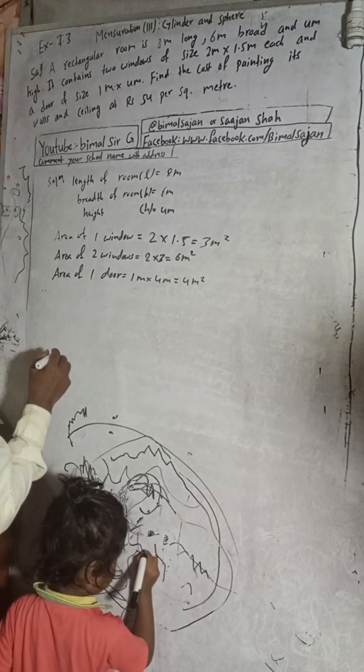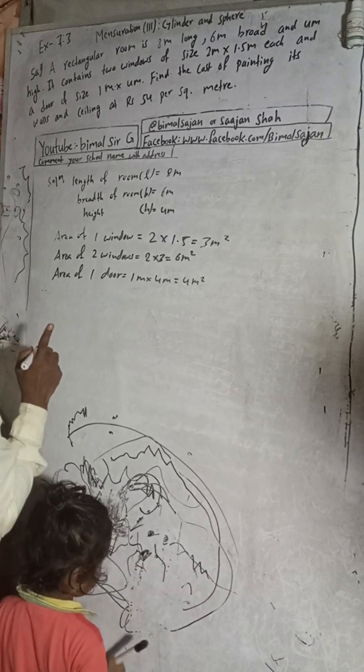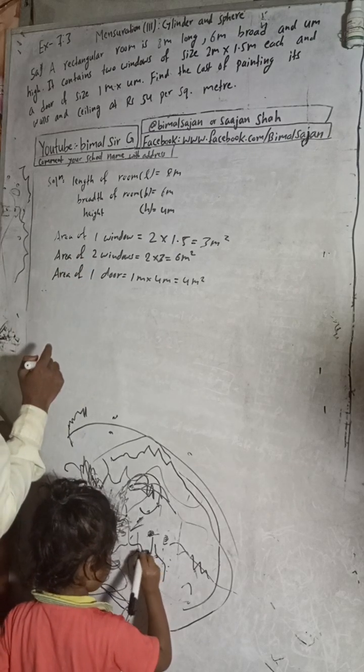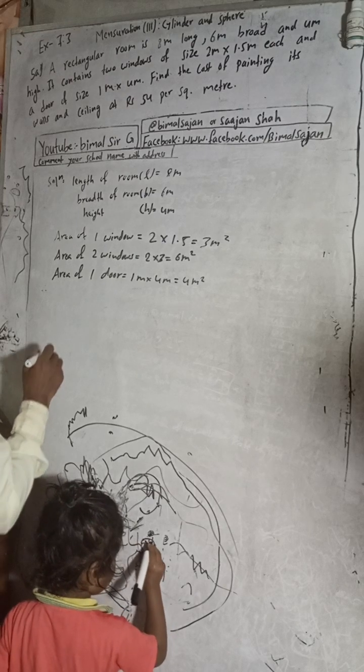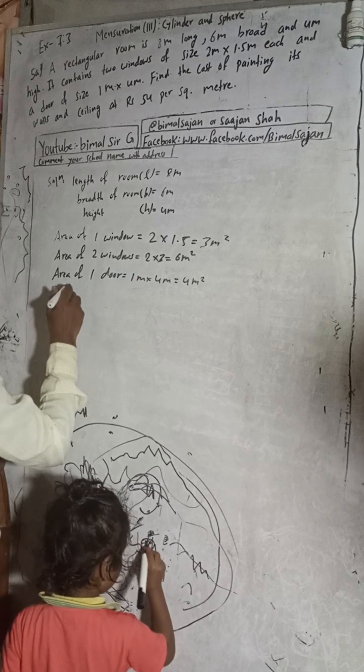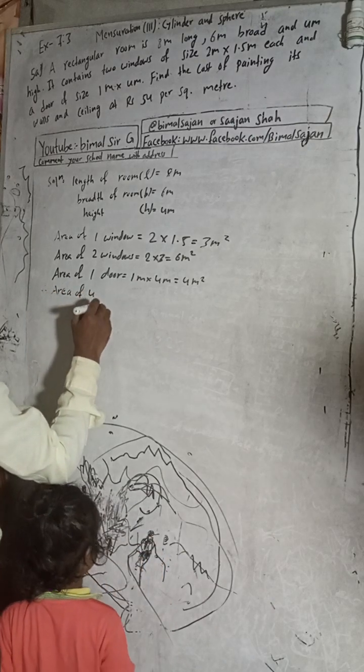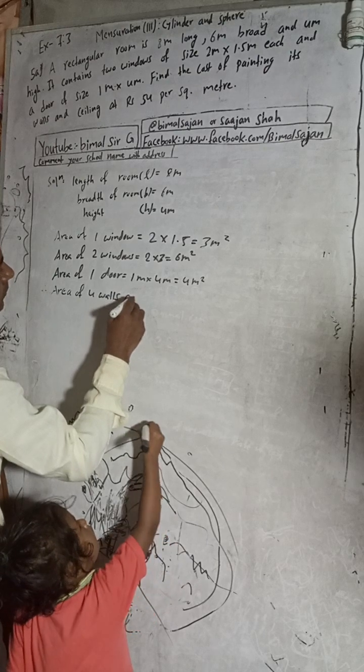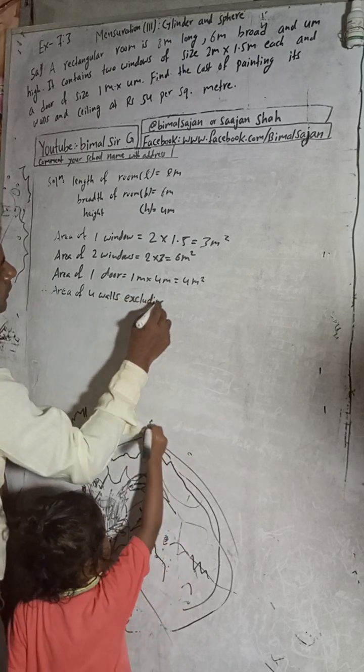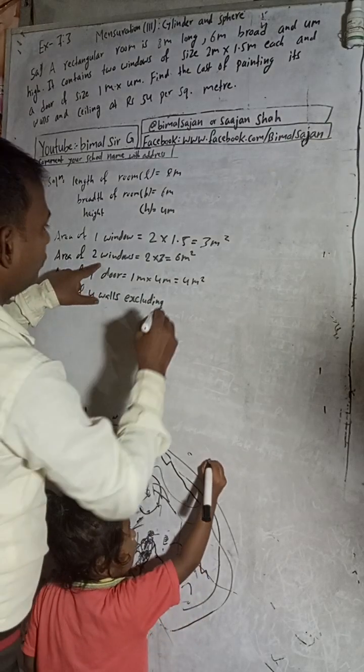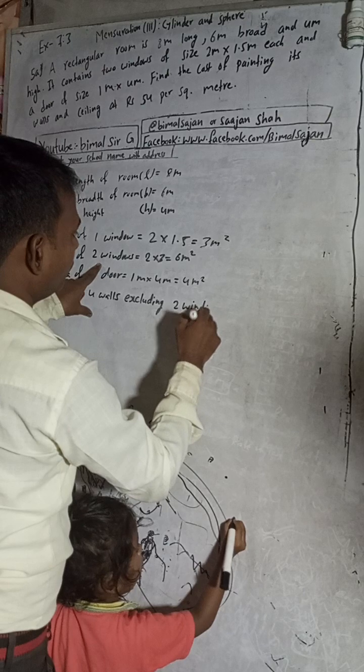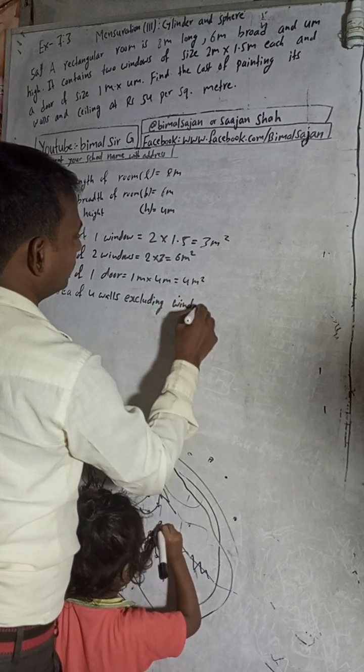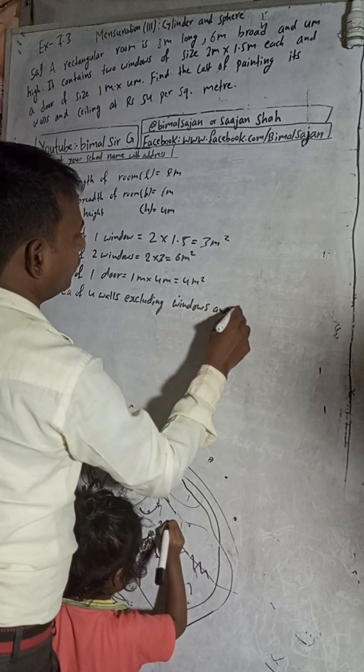Find the cost of painting. While painting is done, we have to minus area of two windows and area of one door. So we can write here area of the four walls excluding - excluding means without - without two windows and door.